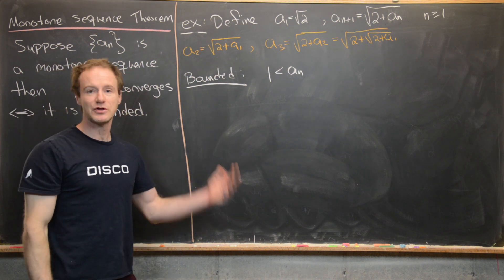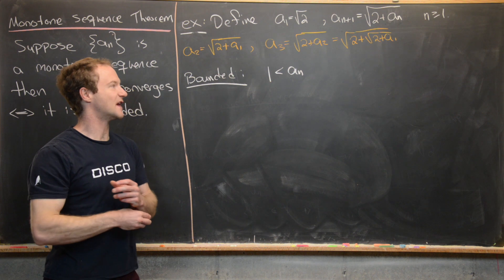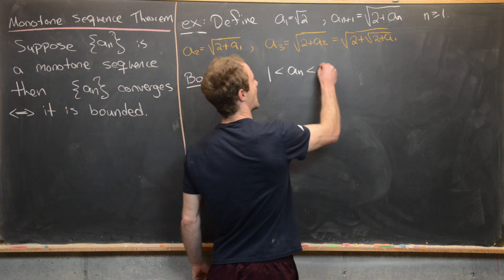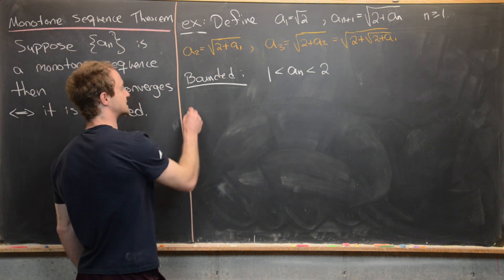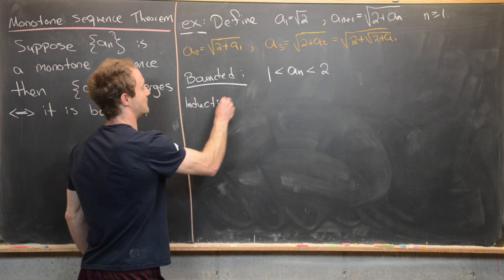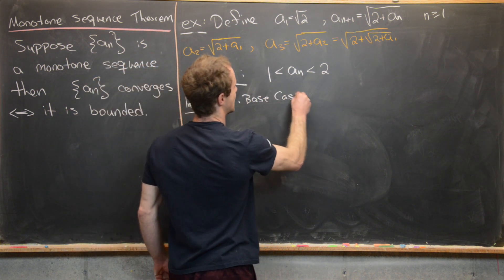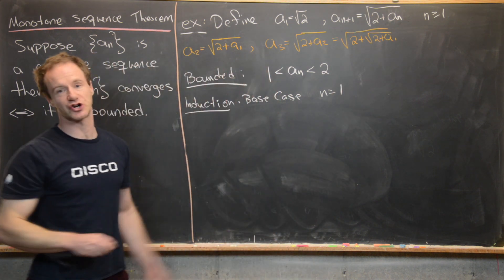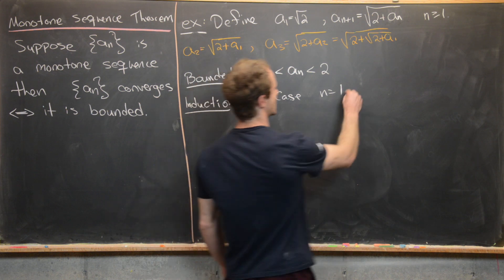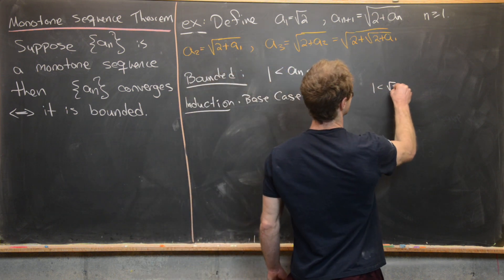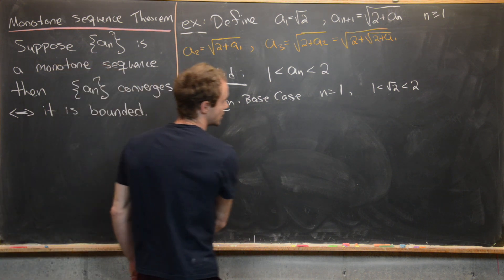Some numerical calculations suggest the upper bound is 2. We'll prove this by induction. The base case is n equals 1: notice that the square root of 2 is strictly between 1 and 2, so the base case holds.